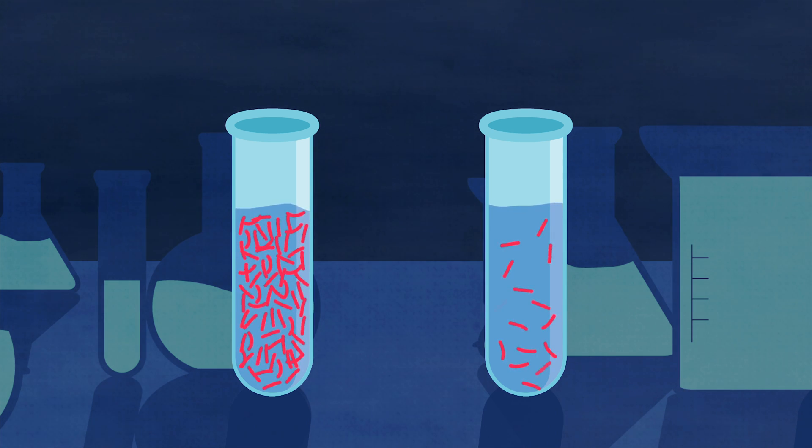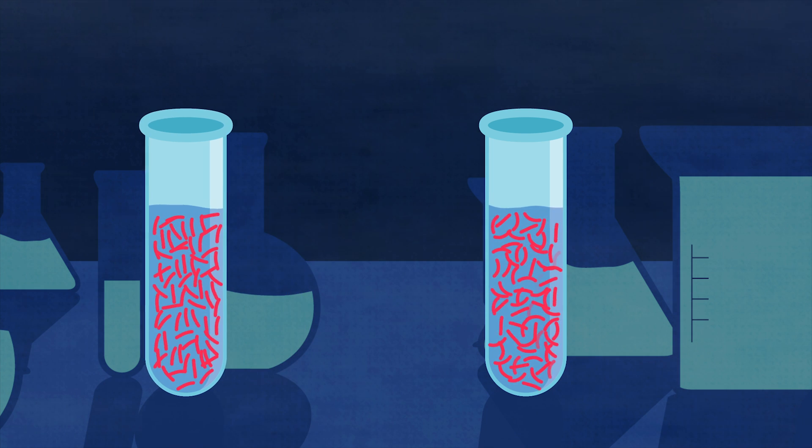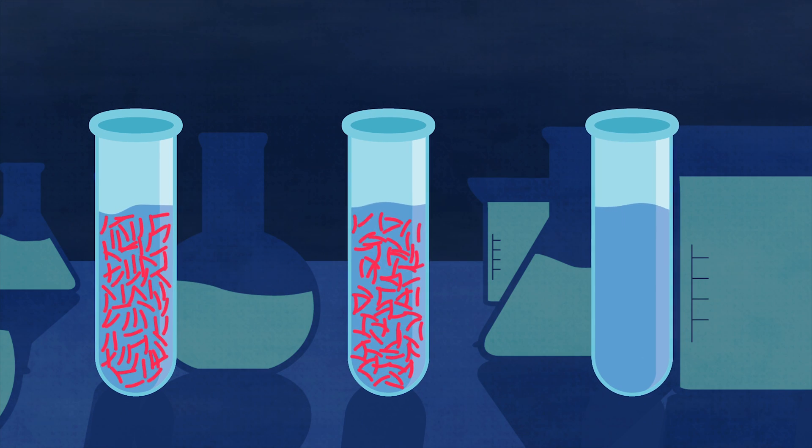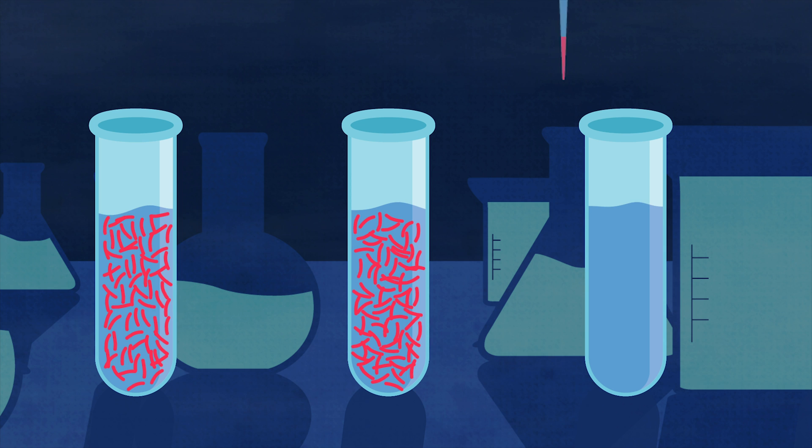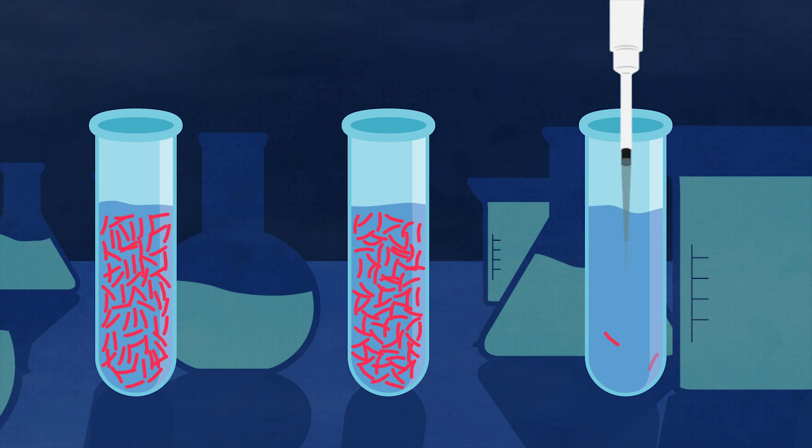The RNA strands added from the first test tube started copying again in this new virgin tube. Again, the RNA replicating exponentially during the initial exponential growth period was added to a third test tube and so on.